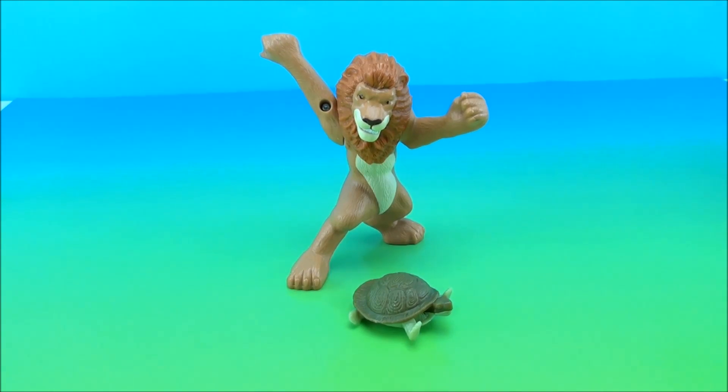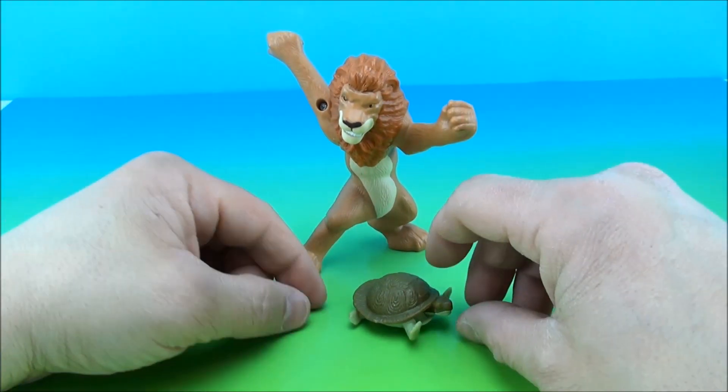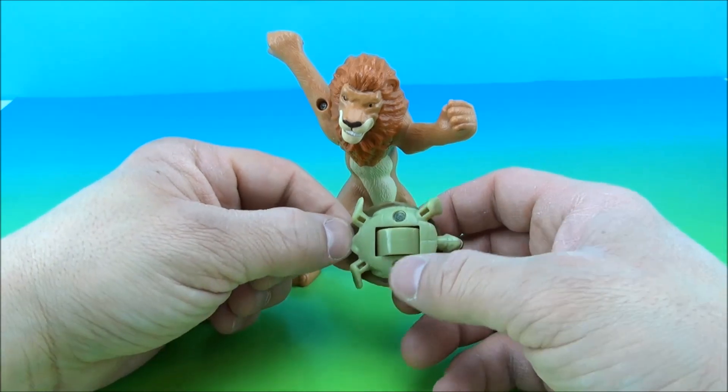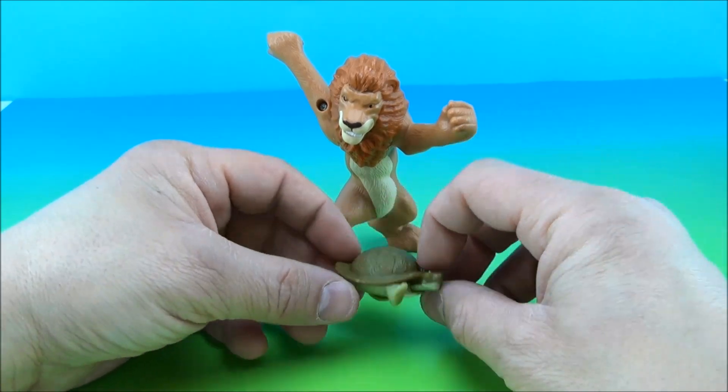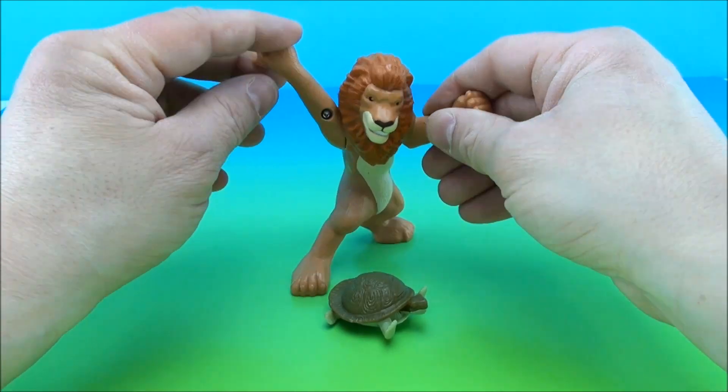Number one on the set, we have Samson. Samson is a lion, as you can see. Samson comes with a roly little turtle. Really cool looking turtle. I love this thing. My daughter enjoys the turtles. She was going to like having that little guy.